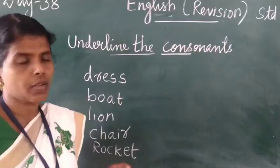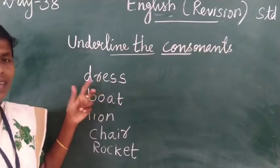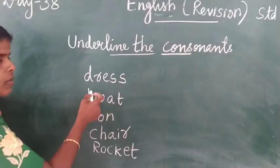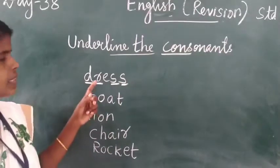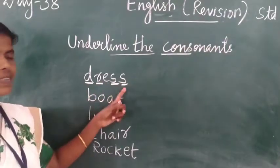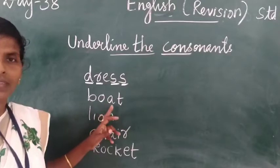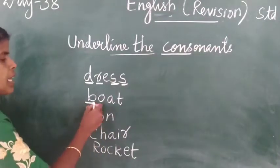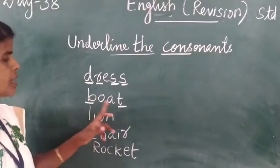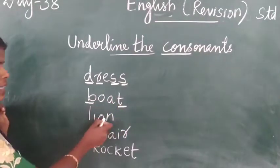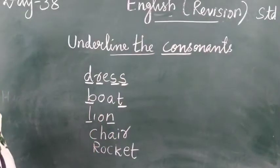Next, dress: D-R-E-S-S. E is the vowel; D, R, S, S are consonants. Next, boat: B-O-A-T. O and A are vowels; B and T are consonants.